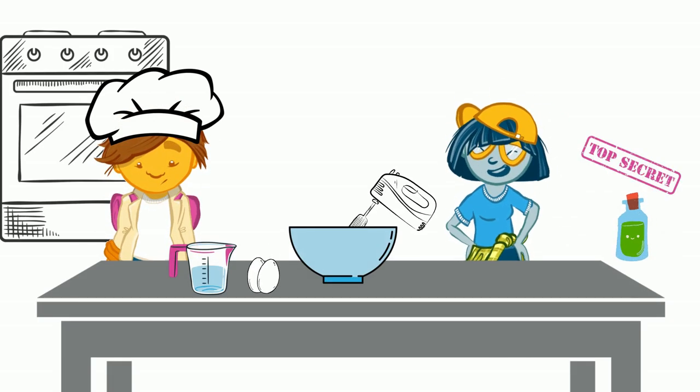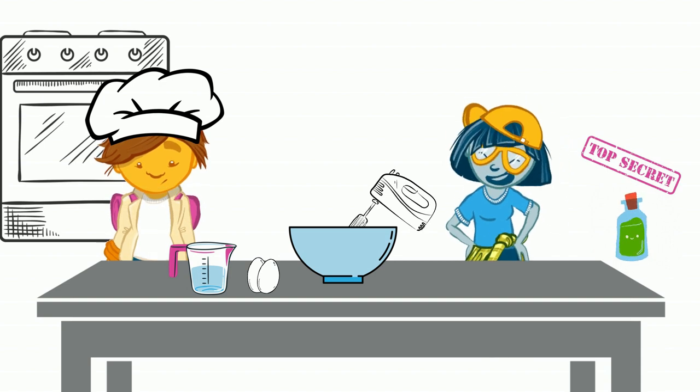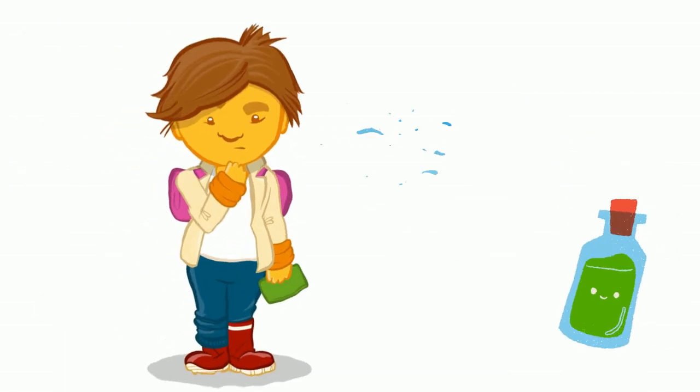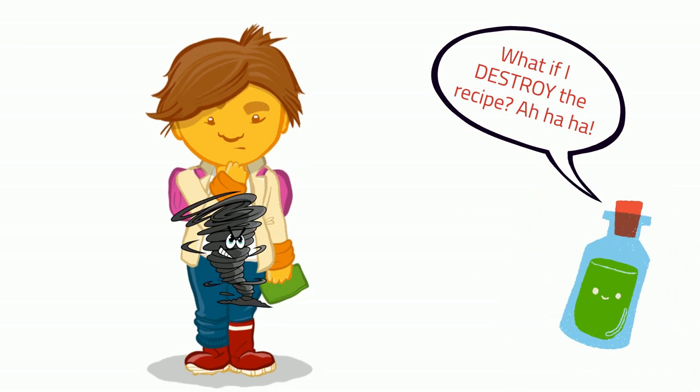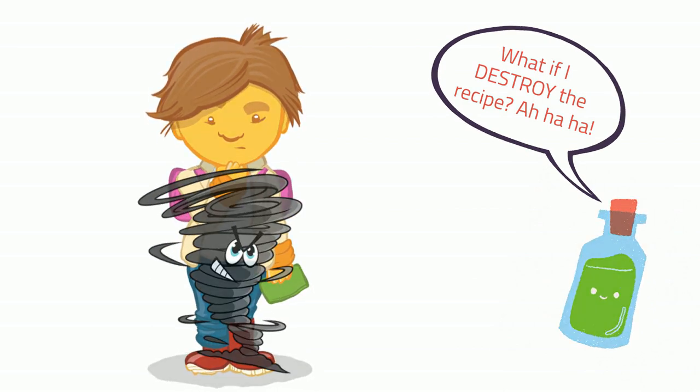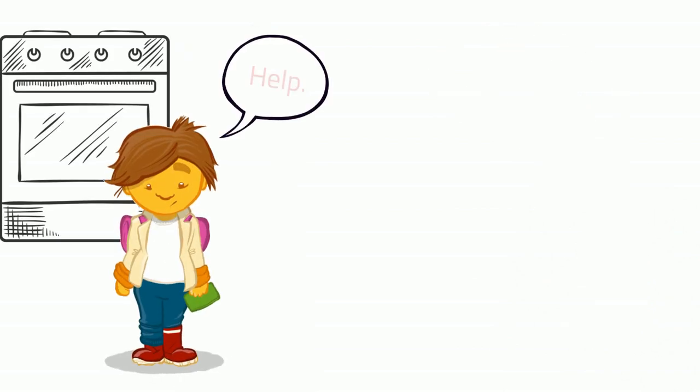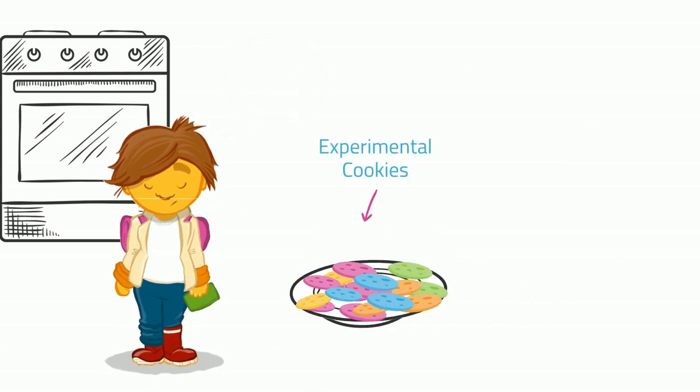Alex had to stop, take a breath, and notice the frustration tornado building inside. Alex asked their foster mom for help, who suggested that these could be experimental cookies. It turns out the secret ingredients were delicious and the cookie recipe is now forever changed.